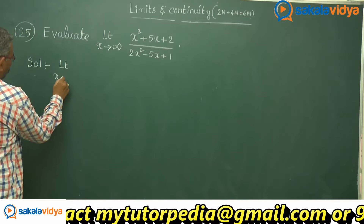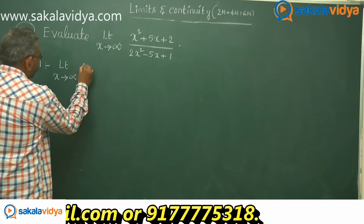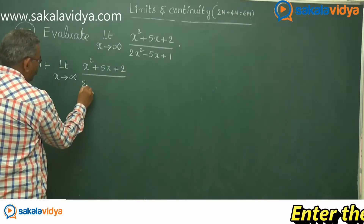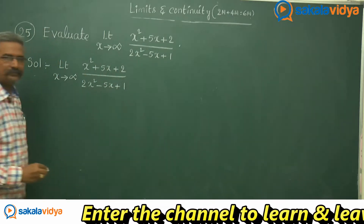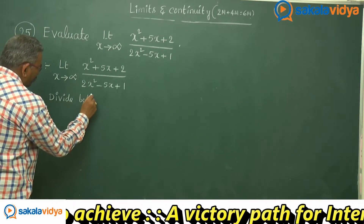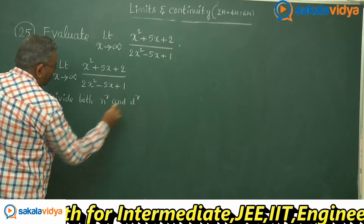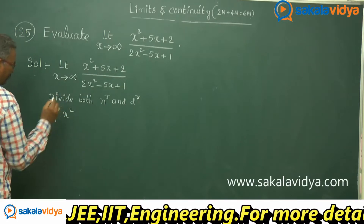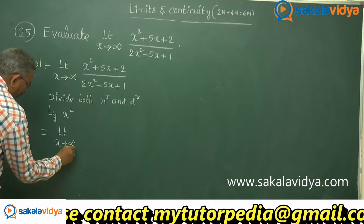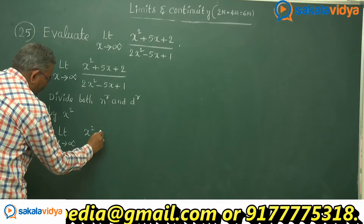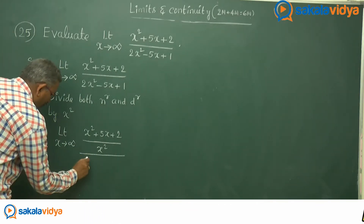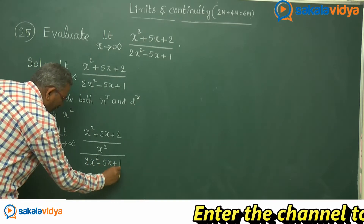Limit extends to infinity: x squared plus 5x plus 2 divided by 2x squared minus 5x plus 1 — divide both numerator and denominator by x squared. So now we get limit extends to infinity of (x squared plus 5x plus 2) divided by x squared, and divided by (2x squared minus 5x plus 1) divided by x squared.